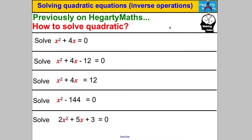So far we've solved quadratics using factorizing. I want you to pause the video and talk through what you would do to solve these five different questions. They all involve factorizing. In this first case there was no number term, so you would have just factorized out the X.